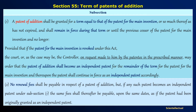Proviso: if the patent for the main invention is revoked, then the court, or as may be the case the controller, on request made by the patentee in the prescribed manner, may order that the patent of addition shall become an independent patent for the remainder of the term of the patent for the main invention, and the patent shall continue in force as an independent patent accordingly.